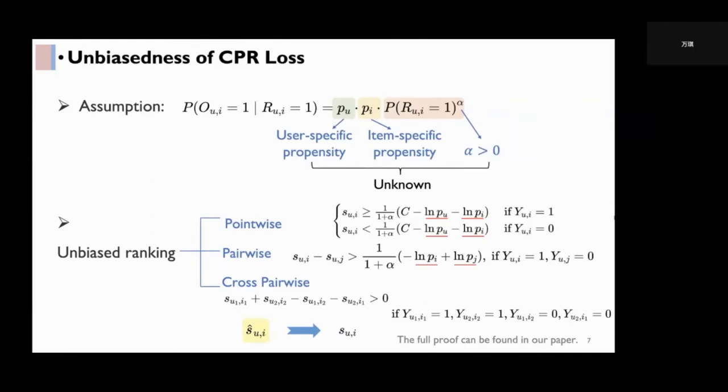But as for the third form, the cross-pairwise form, the propensities and also the alpha no longer exist in the ranking inequality. And this form of ranking is exactly the same as the ranking of predicted scores encouraged by CPR loss.